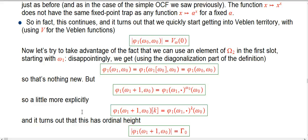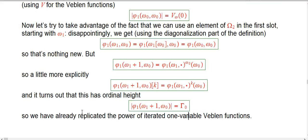So we're cruising here. We've already maxed out the single-variable Veblen functions, just by putting in a tiny little bit more than the minimal omega-2 argument into phi-1. So that's showing that we're getting really powerful, and we're going to go much further than that in terms of how intricate this control argument can be.